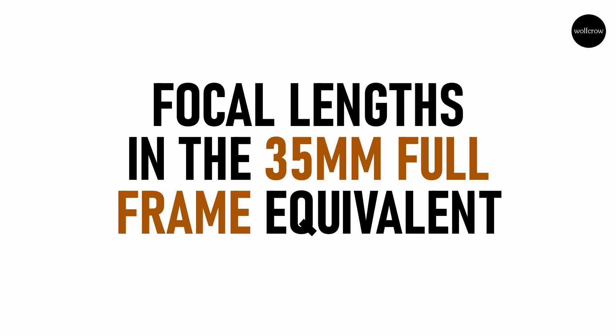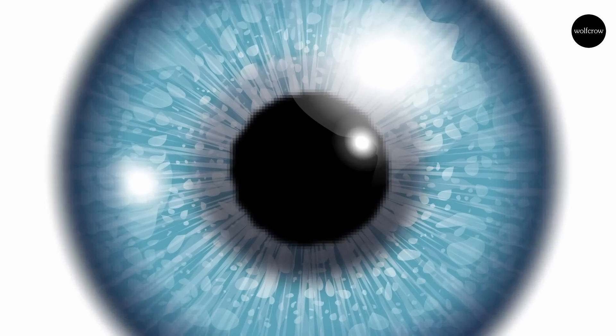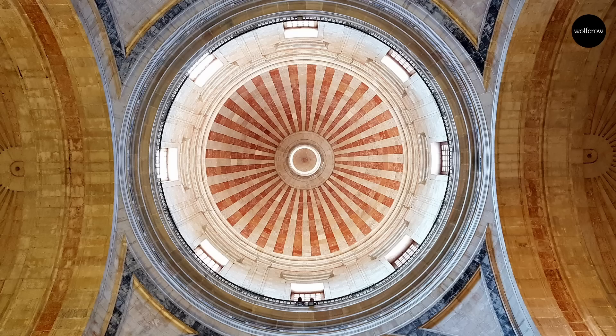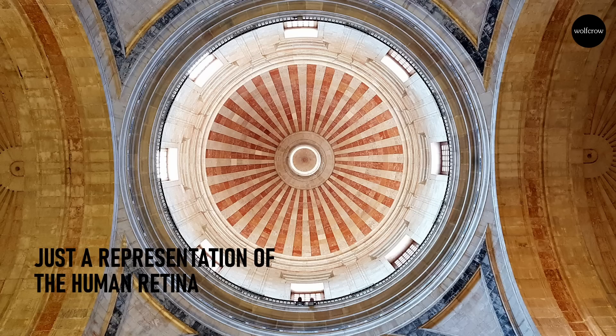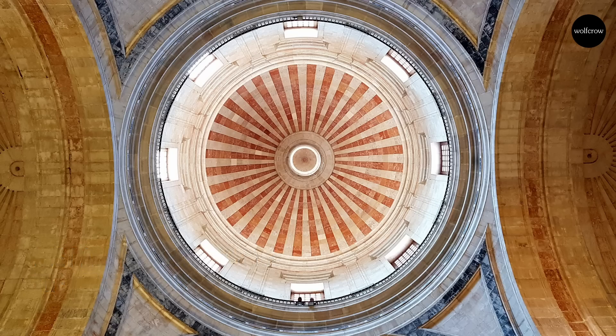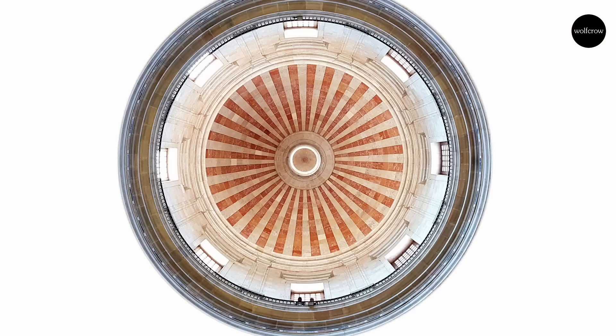For simplicity's sake, I'm going to be using the 35mm full frame equivalent. Light passes through the lens of our eye to the retina. It's not a horizontal camera sensor, but a spherical dome. In humans, the retina is about 72% of a sphere, about 22mm in diameter, which means the area of the retina is about 1094mm². This is nothing like a camera sensor.